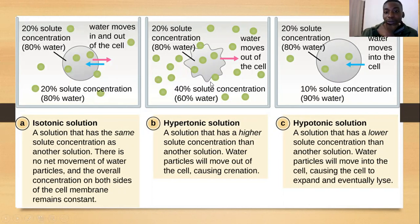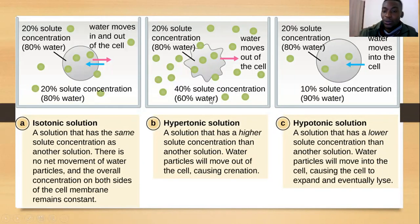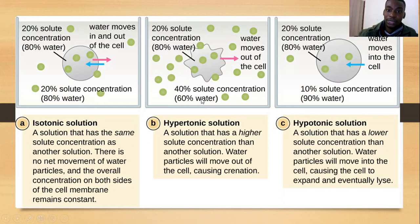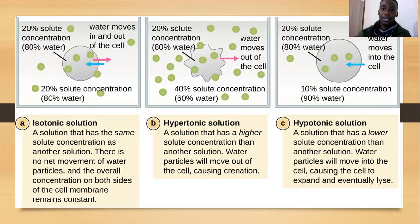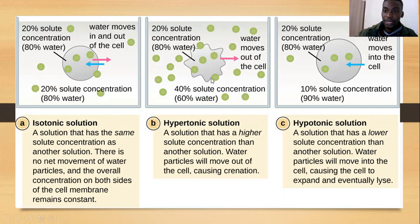In a hypertonic solution, the extracellular environment has 40% solid concentration with more osmotically active particles, while the intracellular environment has only 20% solid concentration. Water moves from the high concentration of 80% water inside the cell to the beaker which has only 60% water. There are more osmotically active particles in the 40% solid solution, so they pull water out of the cell, making it shrink. This process is called plasmolysis.